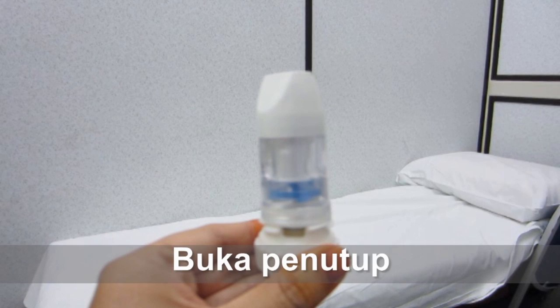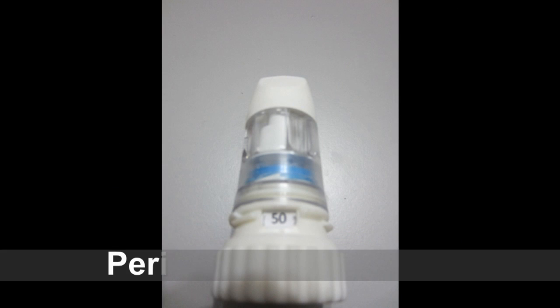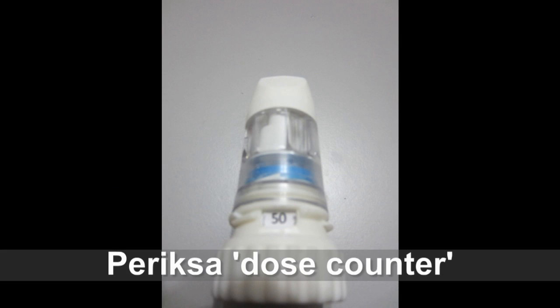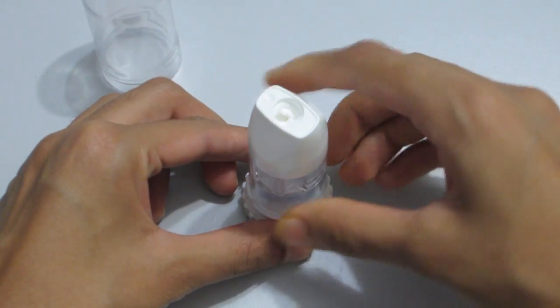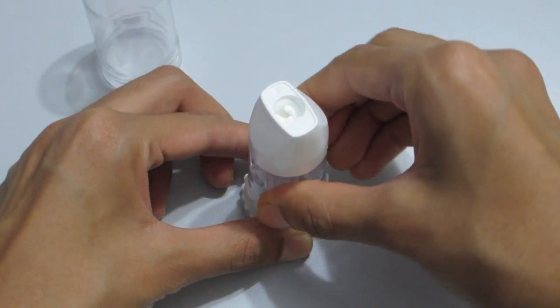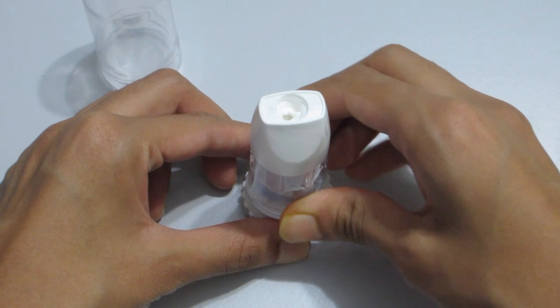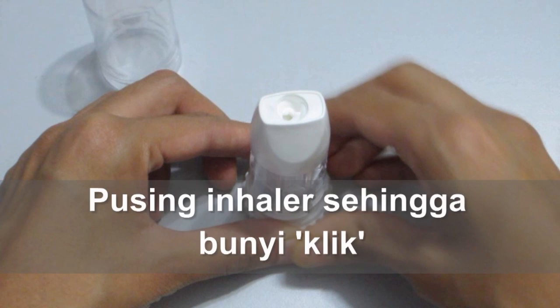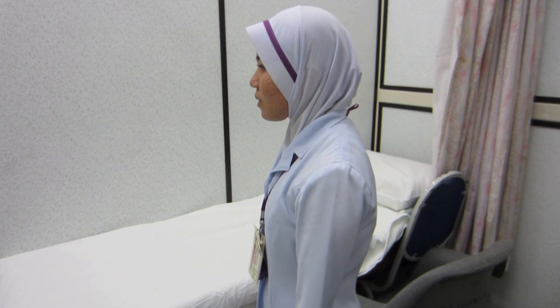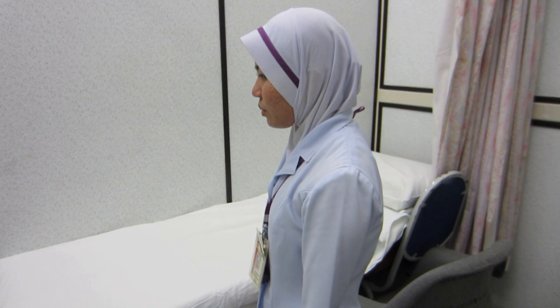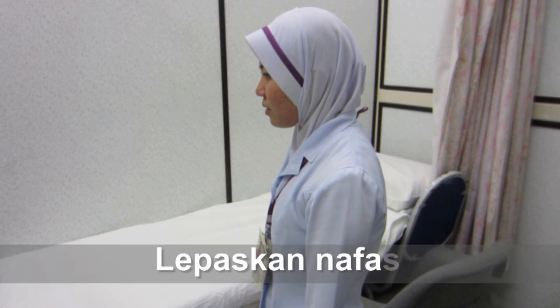Buka penutup inhaler. Periksa dos kaunter pada inhaler. Pegang turbohaler dengan tegak sebaiknya di atas meja. Pusingkan inhaler sehingga bunyi klik. Ikut arah pusingan jam kemudian bertentangan. Lepaskan nafas dahulu.